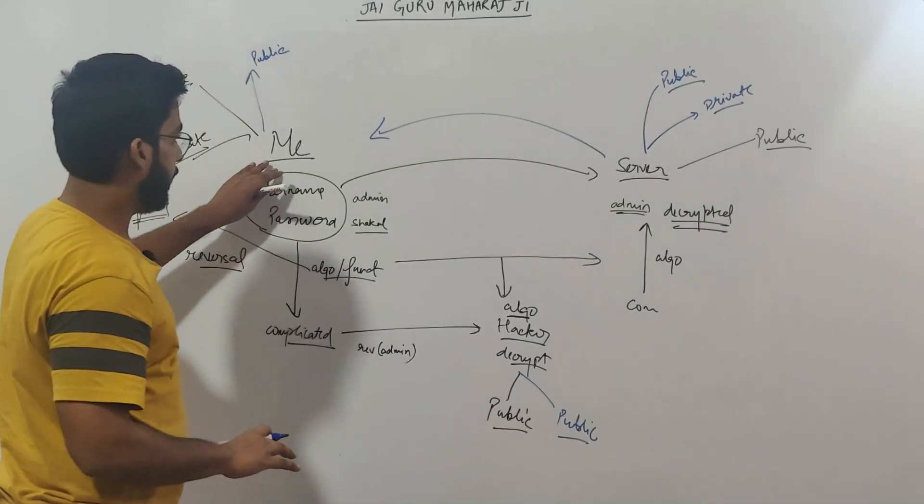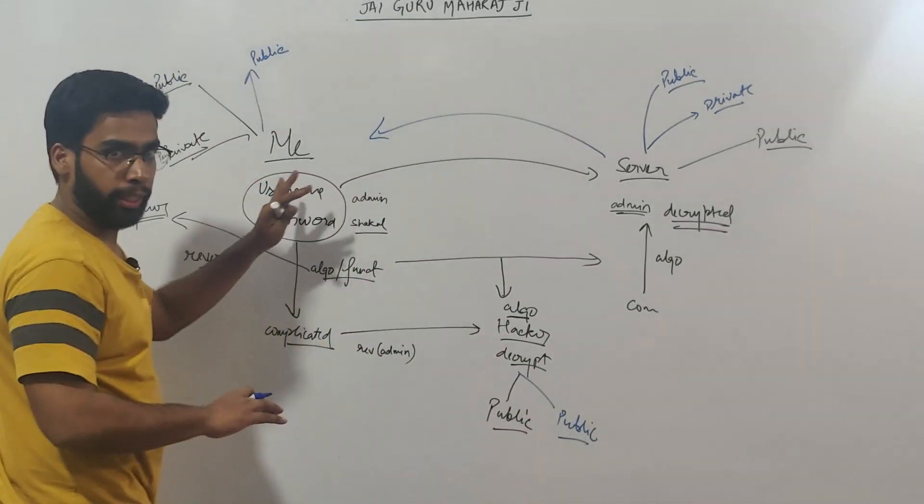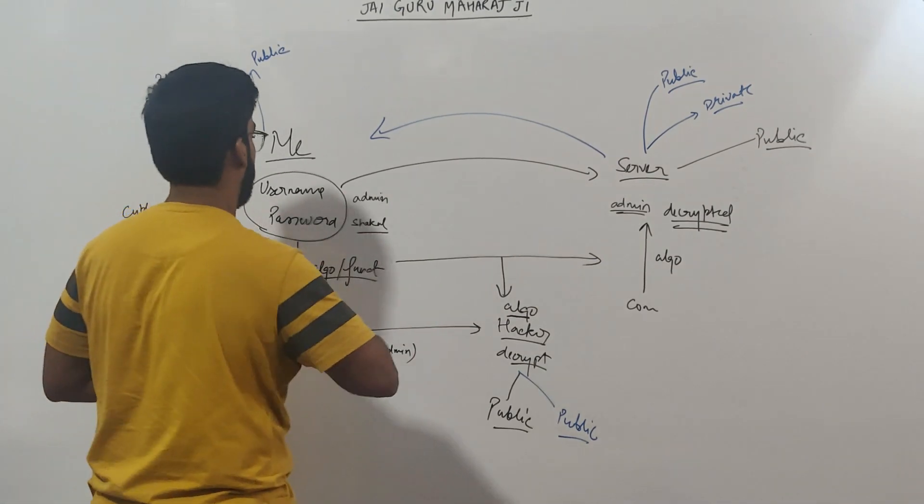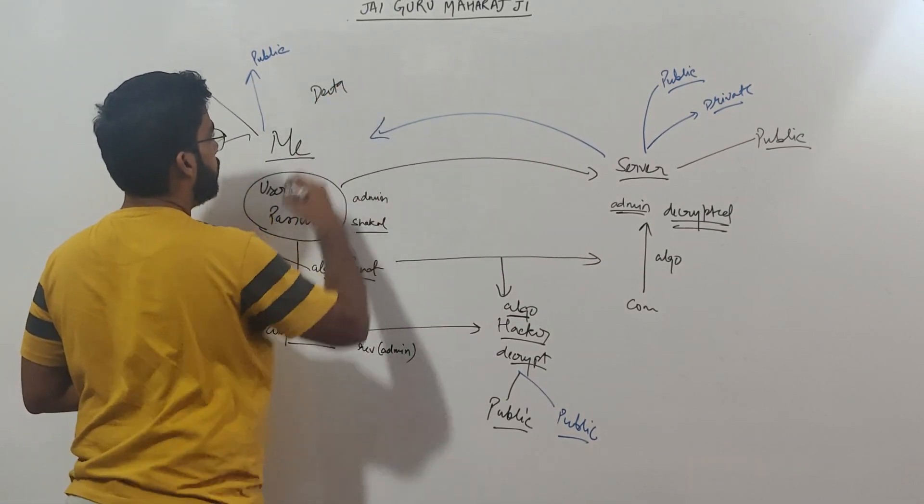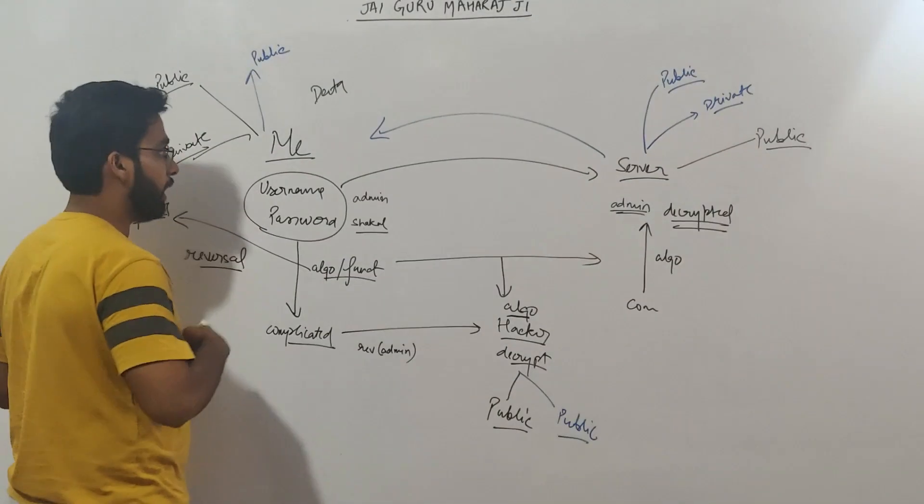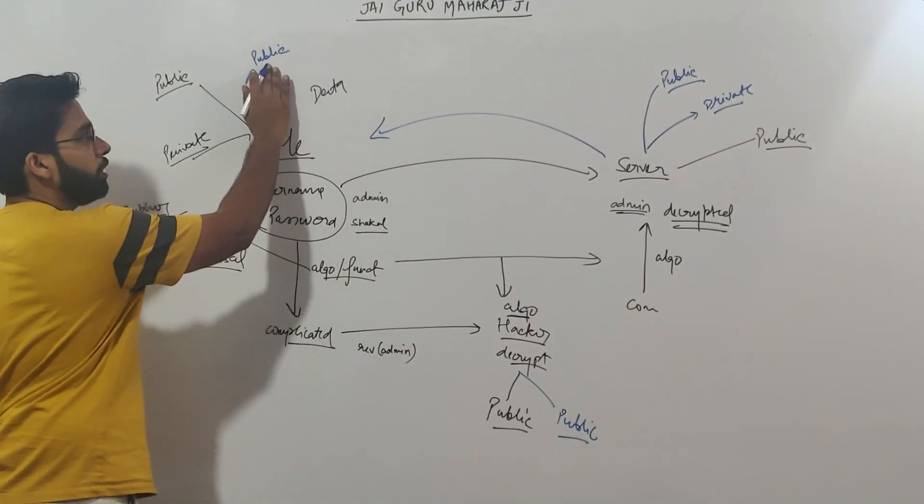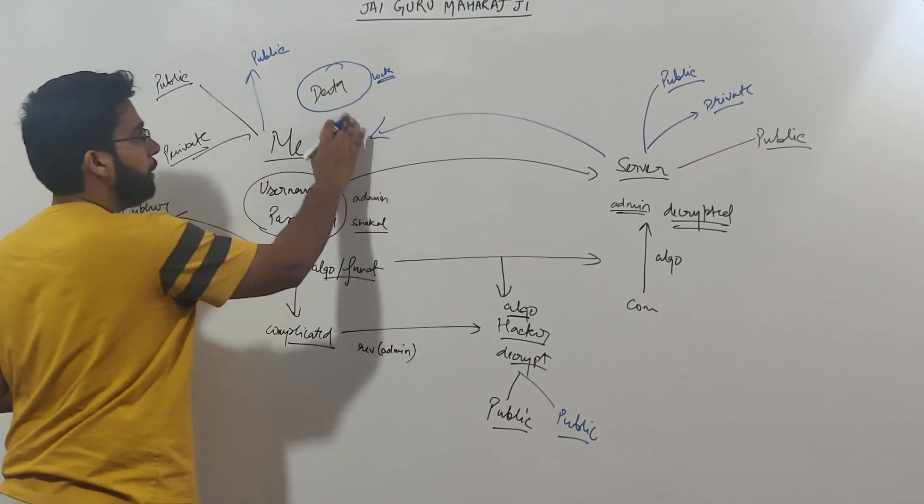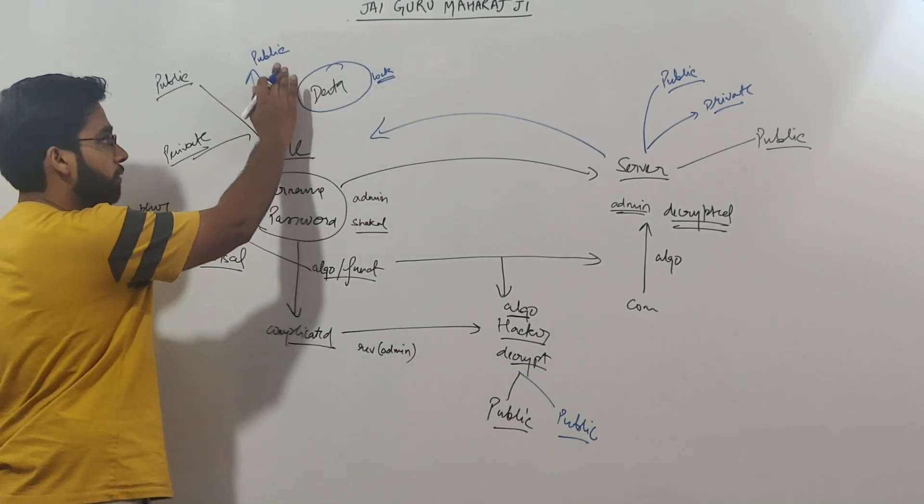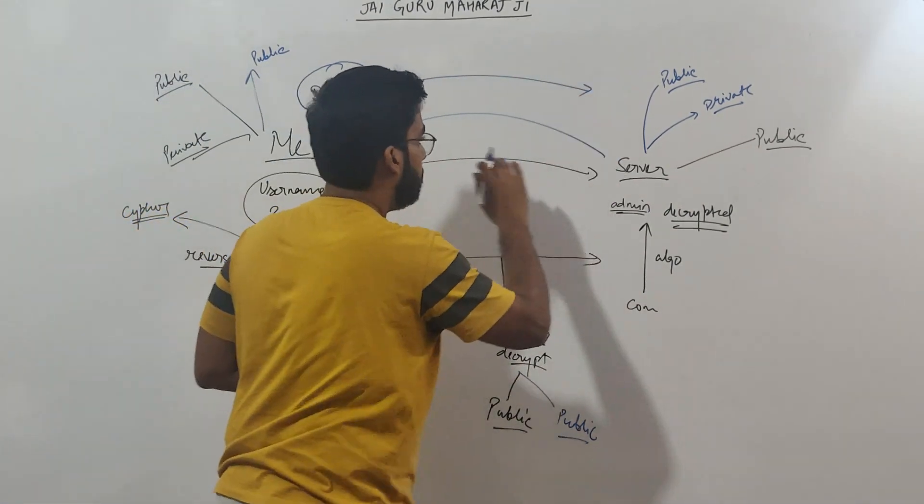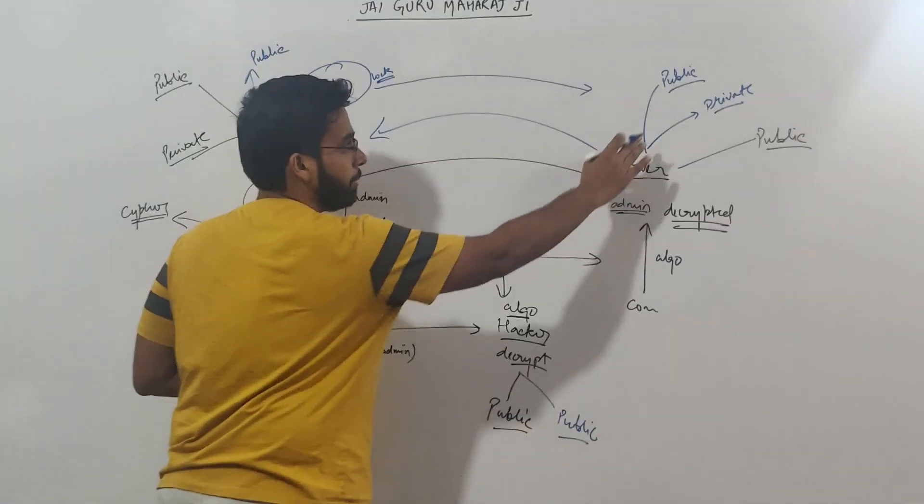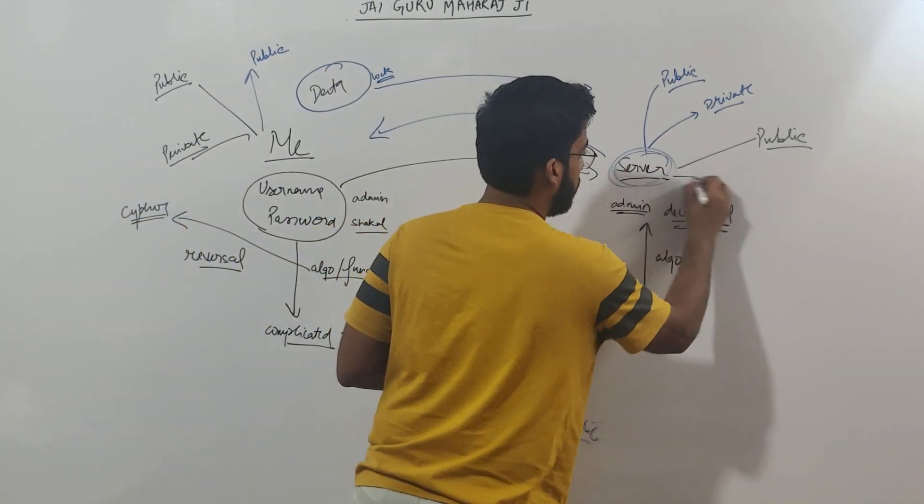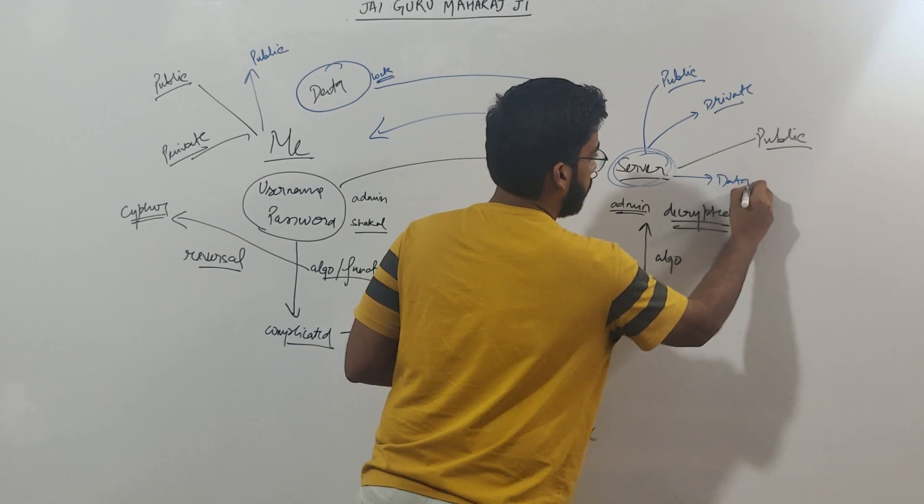Now what happens, me and server have each other's public key right. If I have to send some data, let's suppose I am sending some data, username or password or something. I will encrypt this data using the server's public key. I will lock this data. This lock or encryption will be on public key of the server. And I will send this across. Because the server only has the private key which can unlock this data. So only server will be able to read this data. Got it.